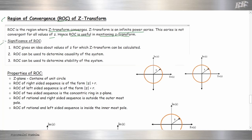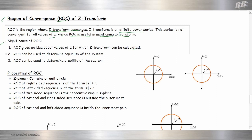What is the significance of ROC? ROC gives an idea about the values of Z for which the Z-transform can be calculated. ROC can be used to determine the causality of the system and also to determine the stability of the system.